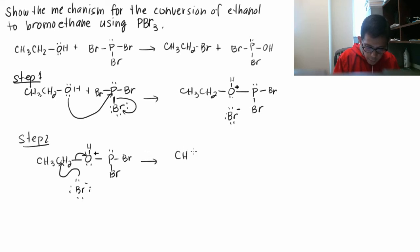And finally, you have your product CH3CH2Br, and the byproduct is this P, Br, Br, and the third attachment to the P is an OH.